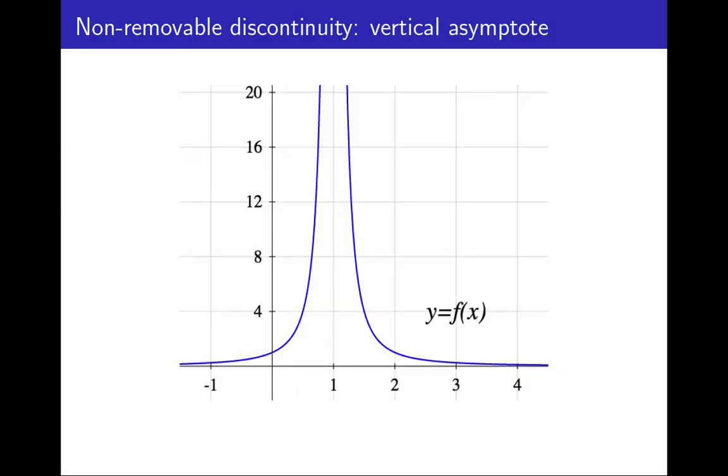This other function does not have a limit at 1 because it has a vertical asymptote at 1. It cannot be fixed either. It cannot be made continuous by defining it at 1. It also has a non-removable discontinuity.